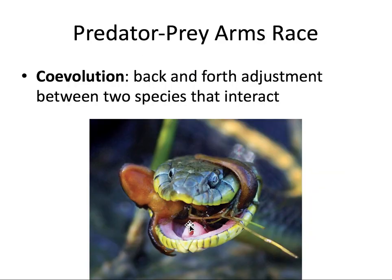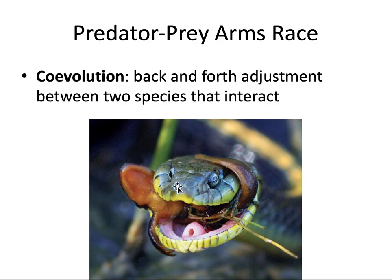Predator-prey arms race: predator and prey co-evolve with each other. Co-evolution is a back-and-forth adjustment between two species that interact. In this photo there are newts, and these newts have highly poisonous substances known as tetrodotoxin — even a small amount can kill a potential predator. How can the snake eat the newt? Because this snake has evolved ways to neutralize that toxin, allowing it to get nutrition from the newt without becoming sick or dying. As the newt became more toxic, the snake evolved to be able to neutralize that toxin. This is an example of co-evolution.